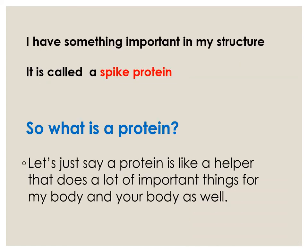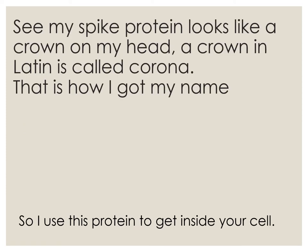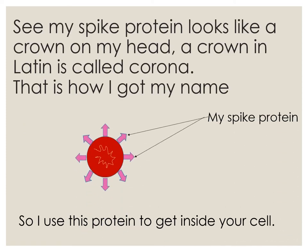I have something important in my structure. It is called a spike protein. So what is a protein? Let's just say a protein is like a helper that does a lot of important things for my body and your body as well. My spike protein looks like a crown on my head. A crown in Latin is called Corona — that is how I get my name.